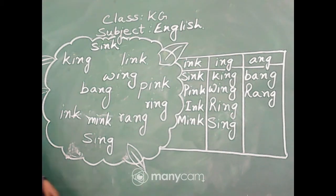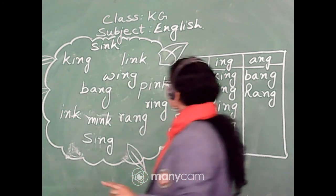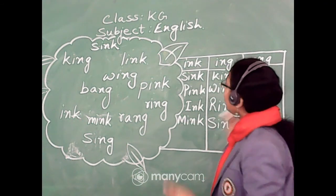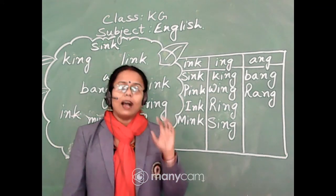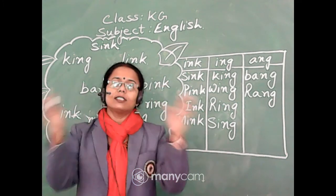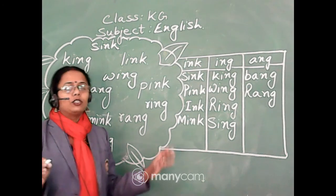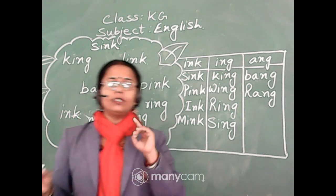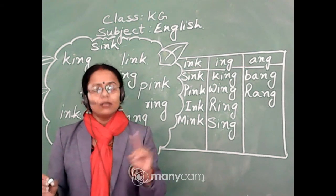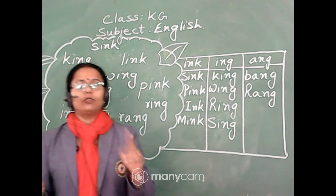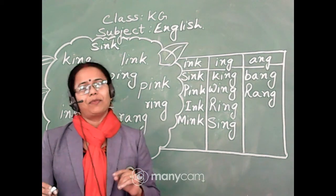So let us see if any -ang word has been missed — no. So this was one of the worksheets where we found how to identify the different sound words when they have been given in jumbled order. Here there are no images; only with the help of sound you have to identify them.